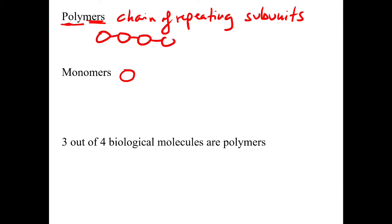A monomer is just one of those, just one single one, where the polymer would be many of them linked together. So three out of the four biological molecules are indeed polymers. One of them is not. I wonder if you know which one isn't.